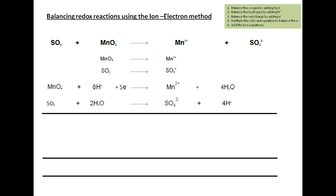The third step is to balance the net charge with electrons. The net charge on the left-hand side is zero because there are no ions, and on the right-hand side we have a net charge of minus two plus four. To balance, we add two electrons to the right-hand side, and the equation is balanced in terms of net charge on both sides.